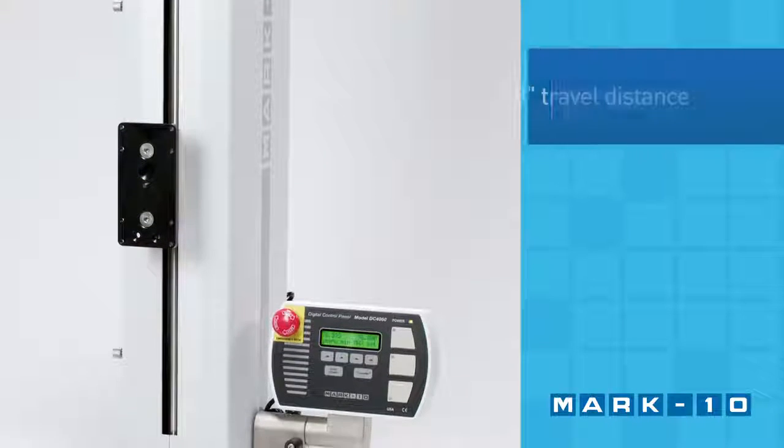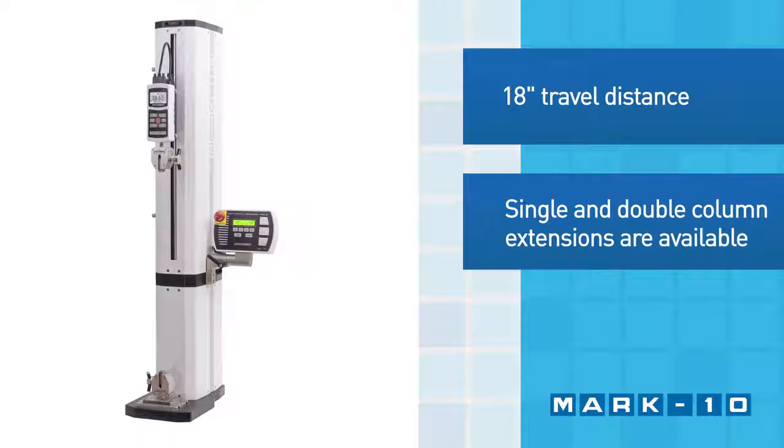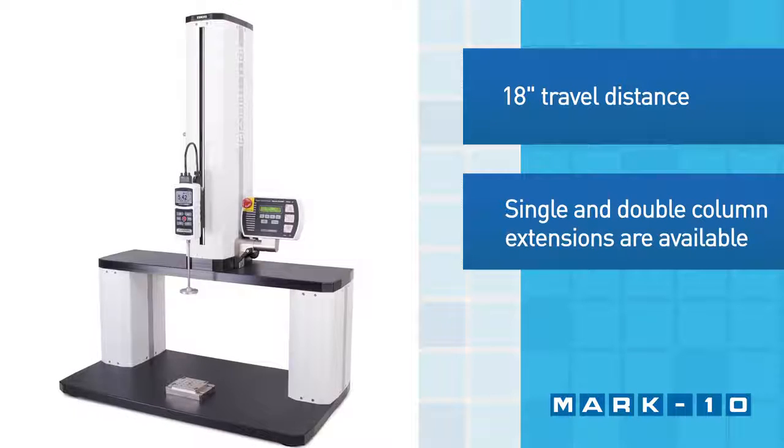The ESM 303 has a generous 18-inch travel distance. The clearance can be increased via single-column extensions or double-column extensions.